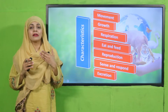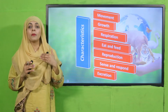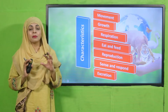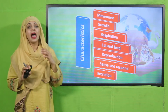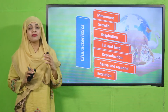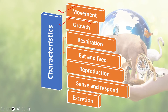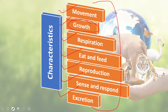Let's review the characteristics of living things, which we will revise on a daily basis. Both animals and plants are living things and share characteristics like movement, growth, respiration, eating and feeding, reproduction, sense and respond, and excretion. Today we will focus on growth.